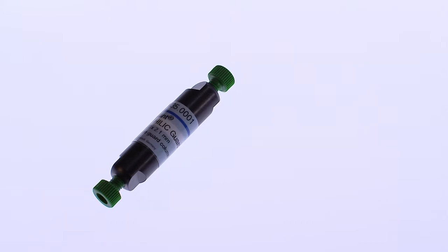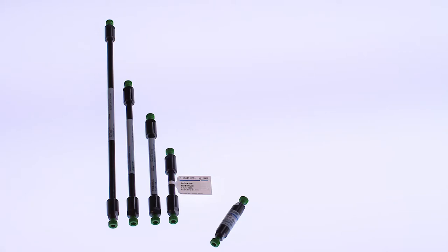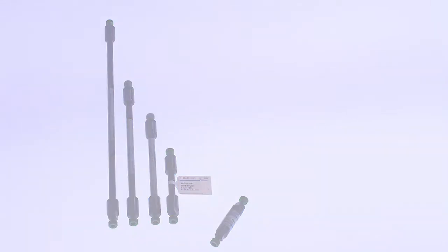Pre-columns or guard columns protect the HPLC column from contamination and extend the life of the column. SeQuant guard columns are designed to protect the analytical columns while maintaining high separation efficiency.